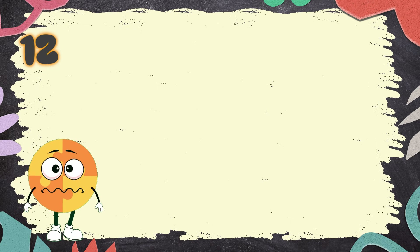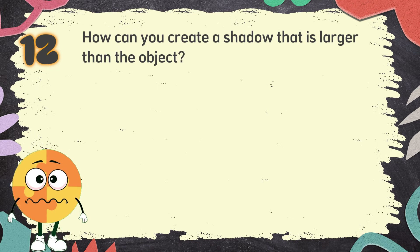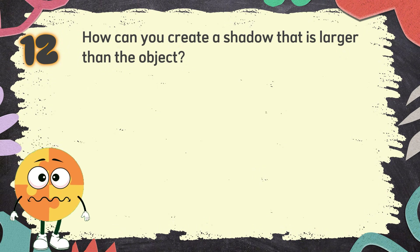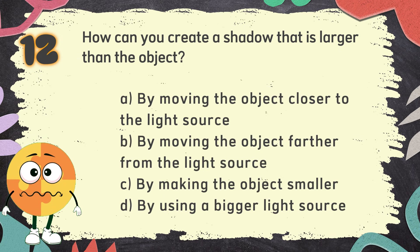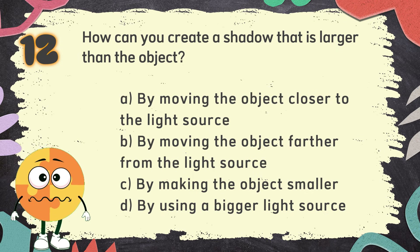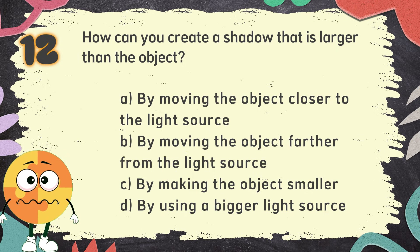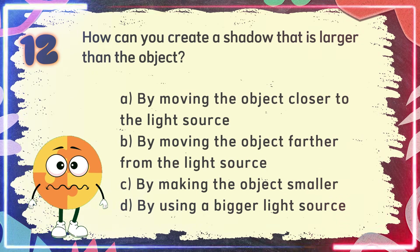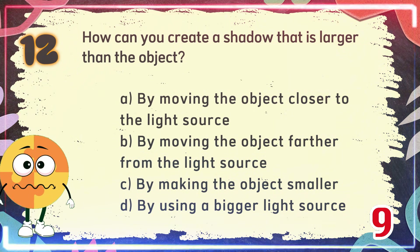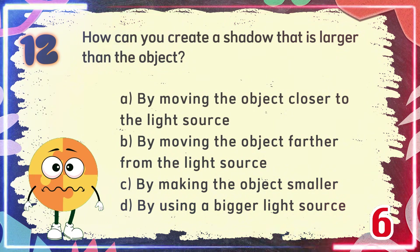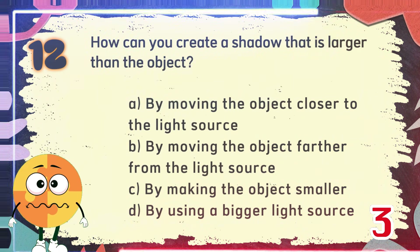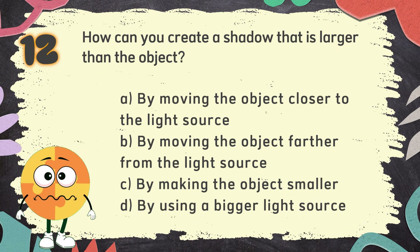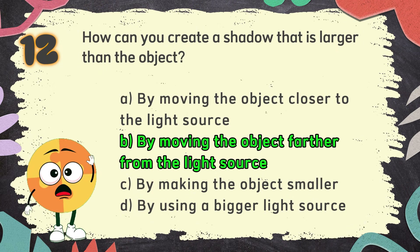Number 12. How can you create a shadow that is larger than the object? The choices are: A. By moving the object closer to the light source, B. By moving the object farther from the light source, C. By making the object smaller, D. By using a bigger light source. The correct answer is B: By moving the object farther from the light source.